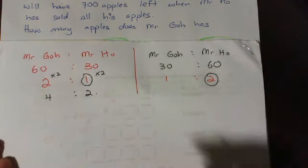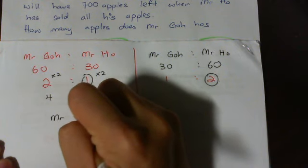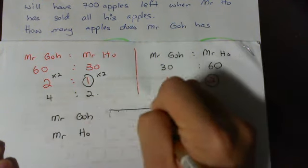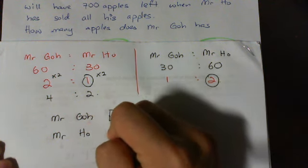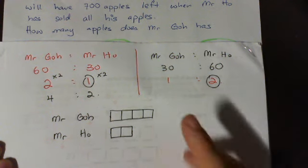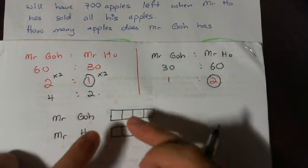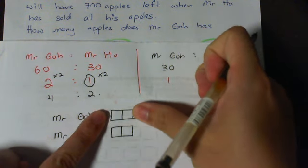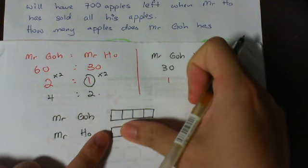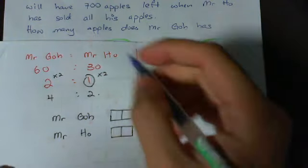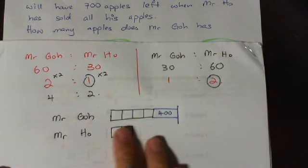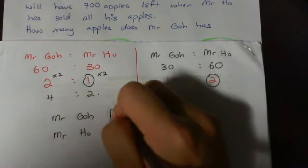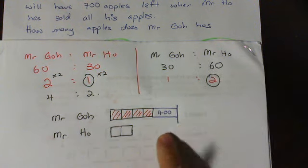Now, next step — let's draw out the model. Mr. Go and Mr. Ho, ratio 4 is to 2. In the first situation, Mr. Go would sell 2 units every day and Mr. Ho would sell this amount. After they have done this, we note that Mr. Go will have 400 extra apples left after Mr. Ho has sold all his apples, which I will highlight in red. After he has sold these 4 units, he will have 400 left.